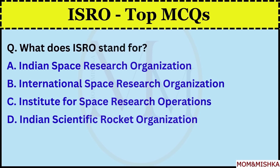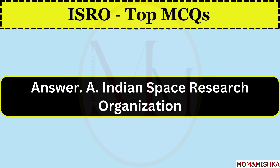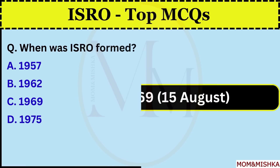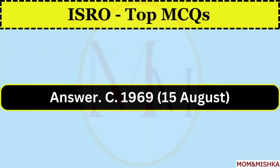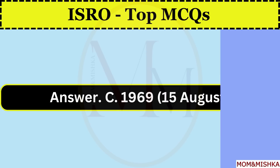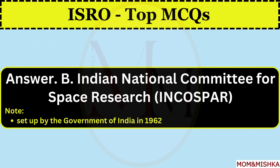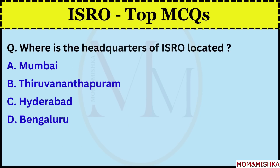What does ISRO stand for? It's Indian Space Research Organization, option A. When was ISRO formed? On 15th August 1969, option C. What was the name of ISRO before 1969? It's Indian National Committee for Space Research, option B. It was set up by the government of India in 1962.